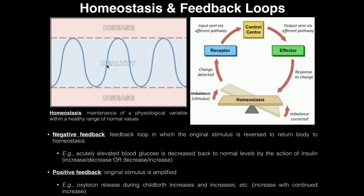The original imbalance is reversed with negative feedback. If a physiological variable is too high, negative feedback will bring it down; if it is too low, negative feedback will bring it back up. For example, acutely elevated blood glucose is decreased back to normal levels by the action of insulin. The response for negative feedback is always opposite, because only by doing the opposite can you bring it back to a healthy level — to homeostasis.